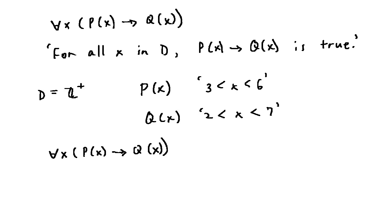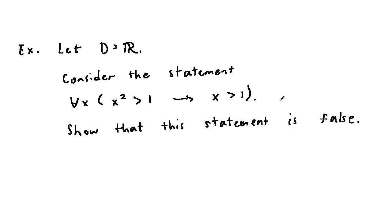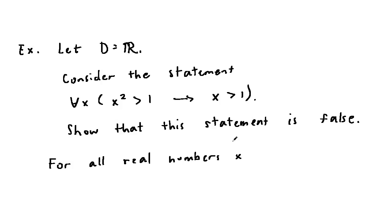Let's do an example. Let D be the set of real numbers. Consider the statement: for all x, x² > 1 entails x > 1. Show that this statement is false. The statement says: for all real numbers x, if x² is greater than 1, then x is greater than 1.